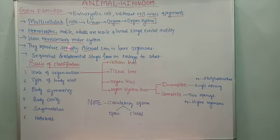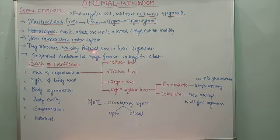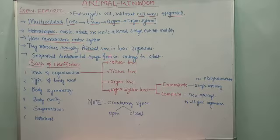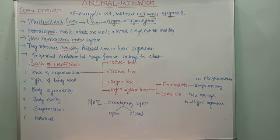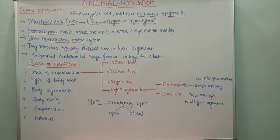With respect to reproduction, sexual reproduction is well developed and highly advanced in animals, taking place by means of sexual gametes. Asexual reproduction is observed only in lower organisms. While both sexual and asexual reproduction are present in the animal kingdom, sexual reproduction is well advanced in higher animals, whereas asexual reproduction is seen only in the lower groups.